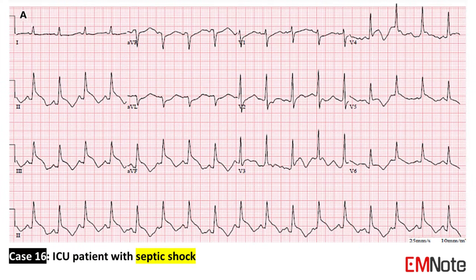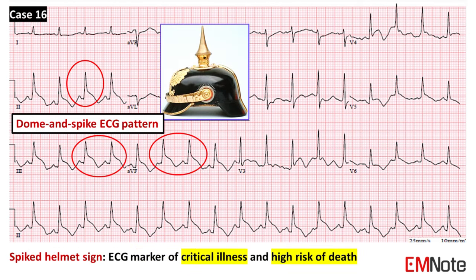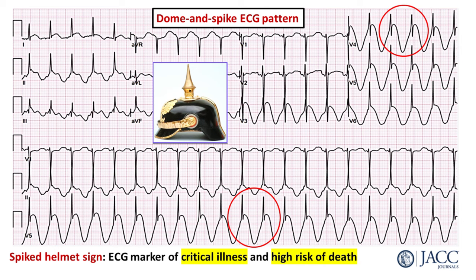Case 16: The patient is an ICU patient with septic shock and unstable hemodynamics. The ECG shows a dome and spike ECG pattern called the spiked helmet sign. Spiked helmet sign is an ECG marker of high mortality risk, which has been most often noted in critically ill patients on mechanical ventilation.